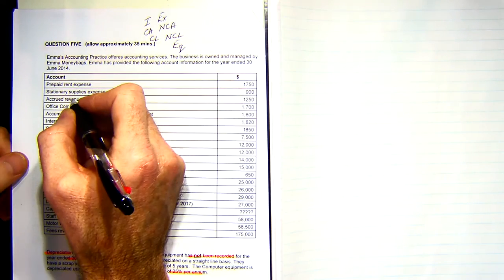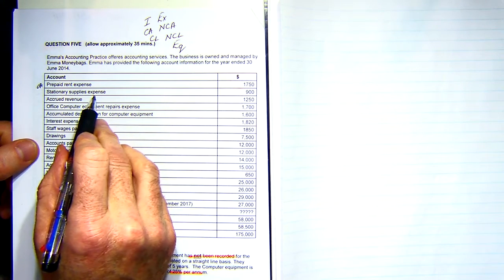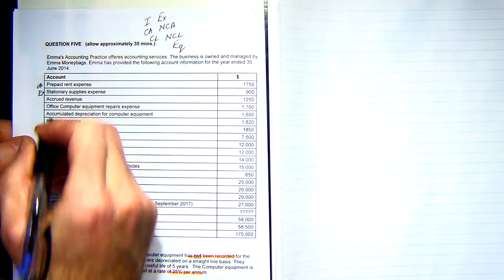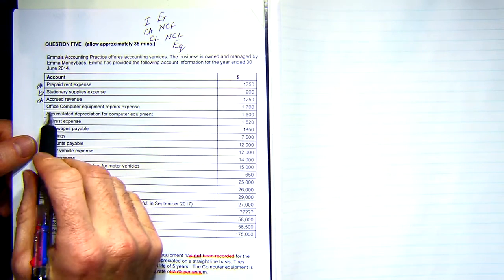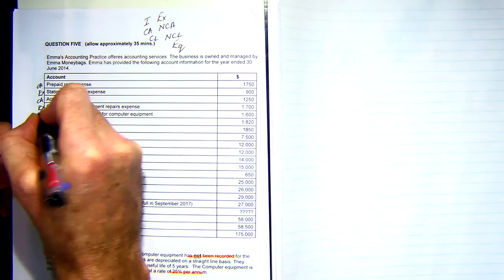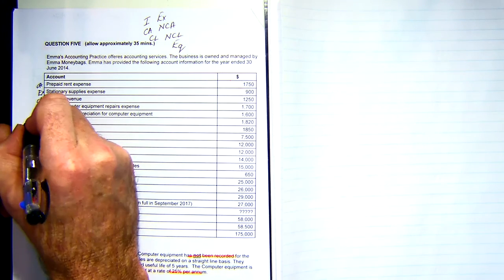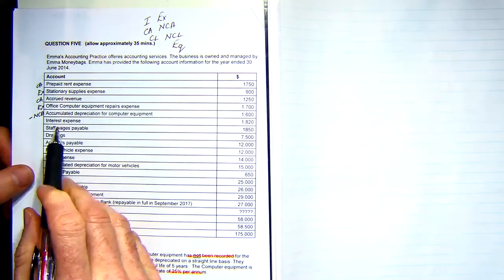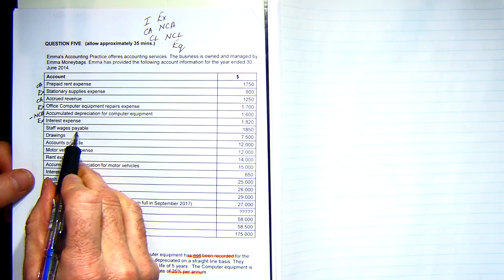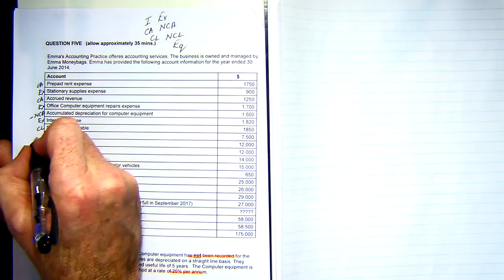Prepaid rent — current asset. Stationery supplies expense — expense. Accrued revenue — current asset. Office computer equipment repairs expense — expense. Accumulated depreciation for computer equipment — a negative non-current asset; it actually reduces my assets. Staff wages payable — current liability. Drawings — equity.